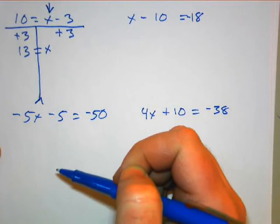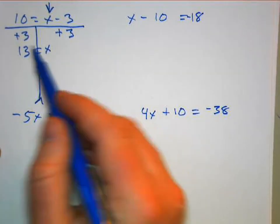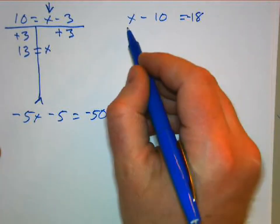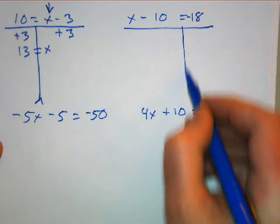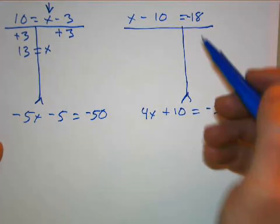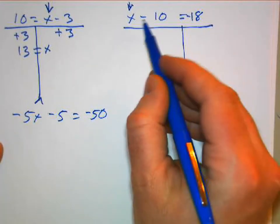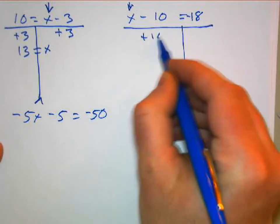So again, draw your teeter-totter, and we remember we want to isolate X, get it by itself. And what undoes minus 10? Plus 10. So what's left? X equals...